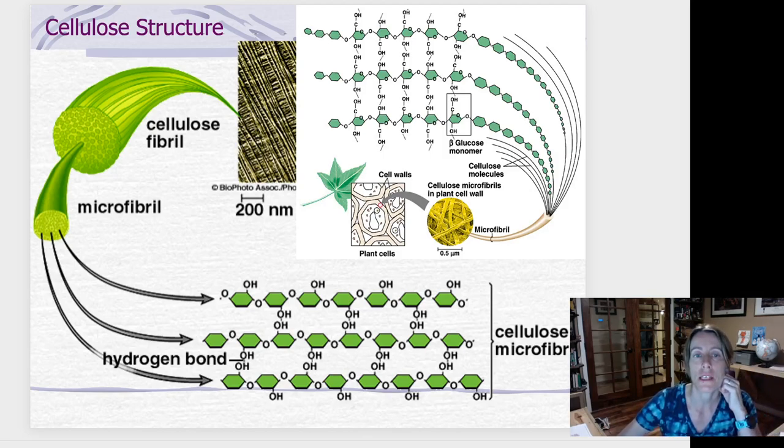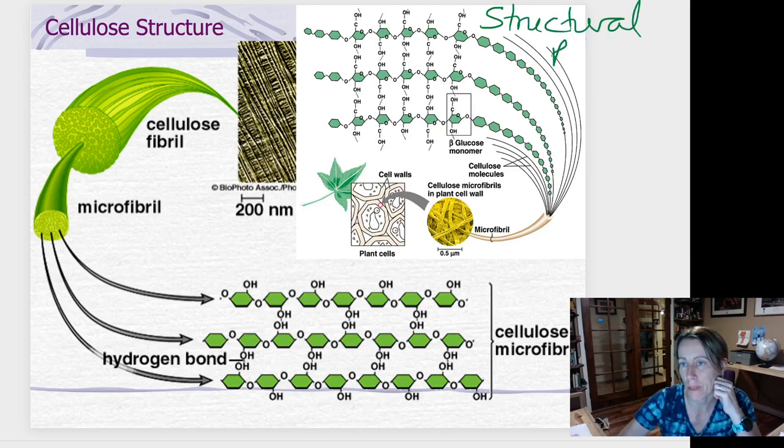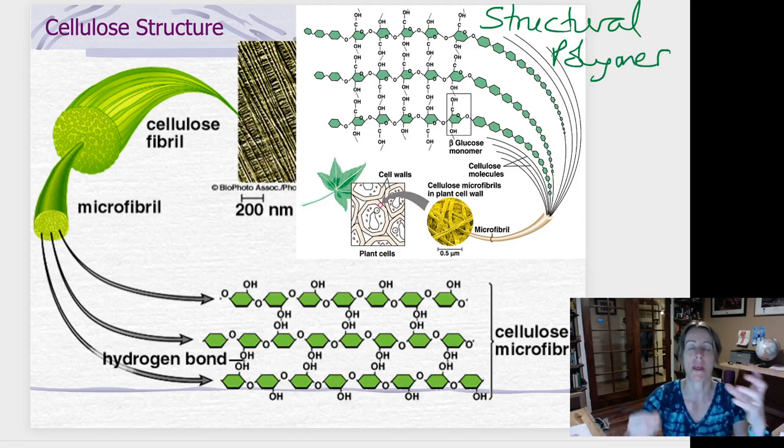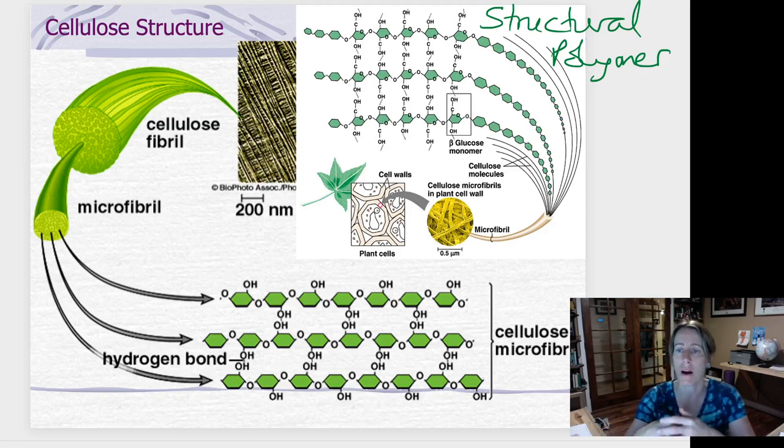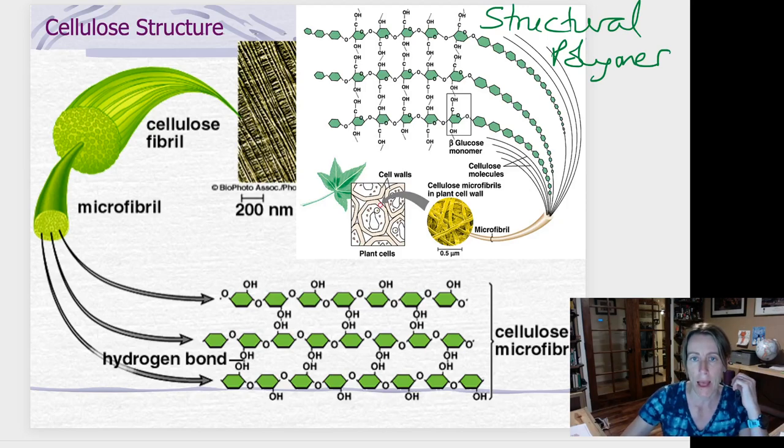But there's another difference here. Cellulose is what we call a structural polymer. It means it's a molecule that helps give things shape. We can think of cellulose as a little bit like rebar that runs through concrete that kind of holds concrete in shape. So cellulose is a material that plants build.